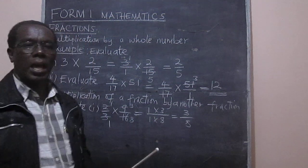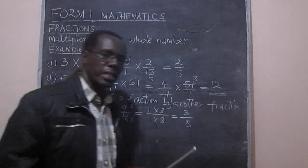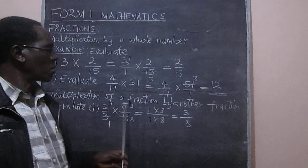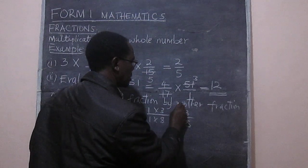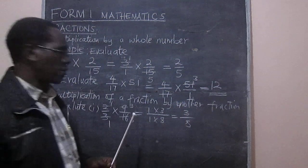And that gives us 3 over 8. So I would like us to look at one more example on how we can multiply a fraction by another fraction.